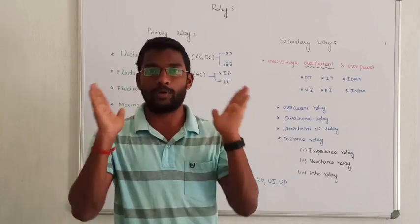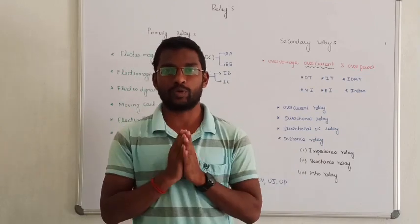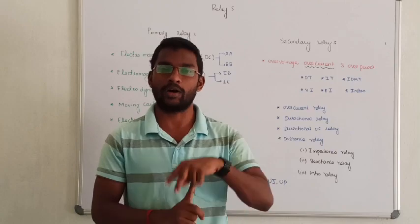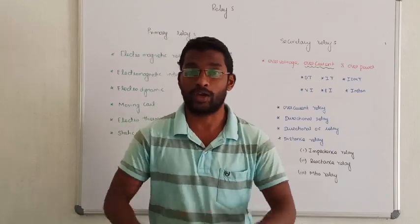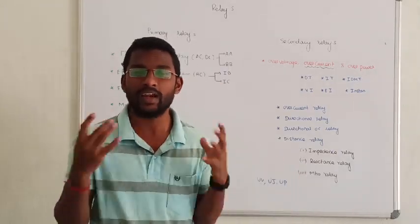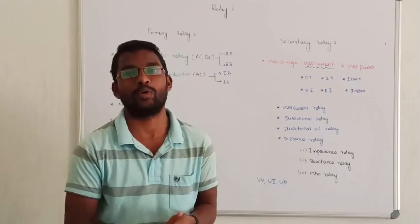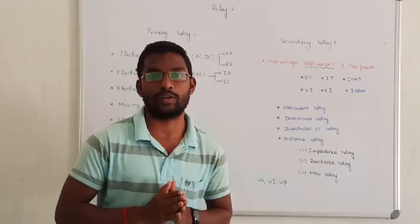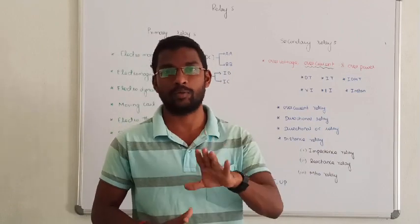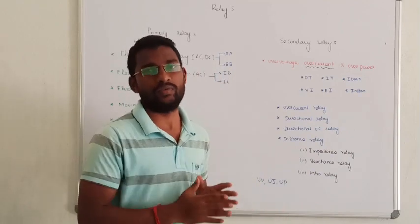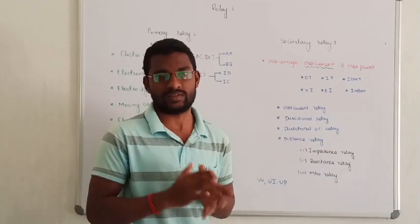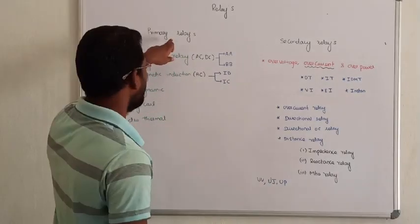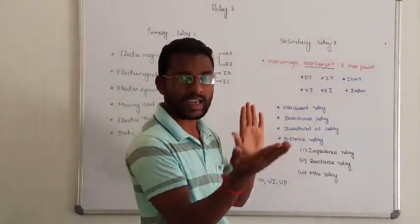So what is the conclusion? In our power system, we use relays. Now let us see the classification of the relay. Basically, there are two types of relay: one is the primary relay and the other is the secondary relay.